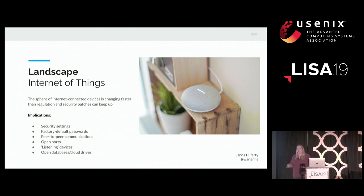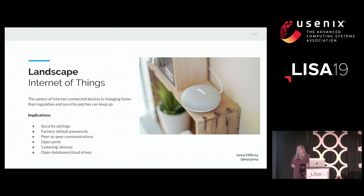There are also peer-to-peer communications to consider. Take a smart doorbell — these video streaming services, many people don't want to pay for cloud storage for long periods of time, so they use the universal plug-and-play setting. What that does on the back end is open a port on your router so you can access it from your mobile device anywhere in the world — that's not the most secure thing. Instead, you want cloud storage in the middle to help authenticate both ends of the communication between your mobile device and your smart doorbell.